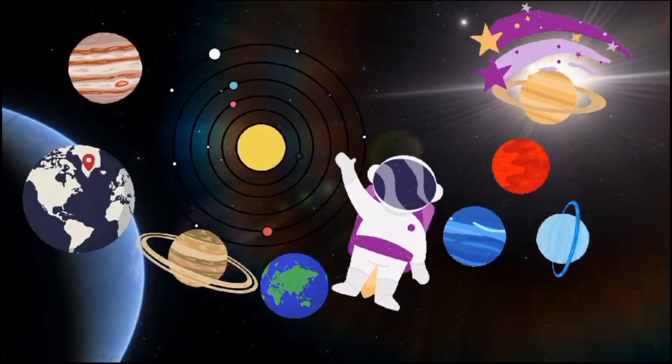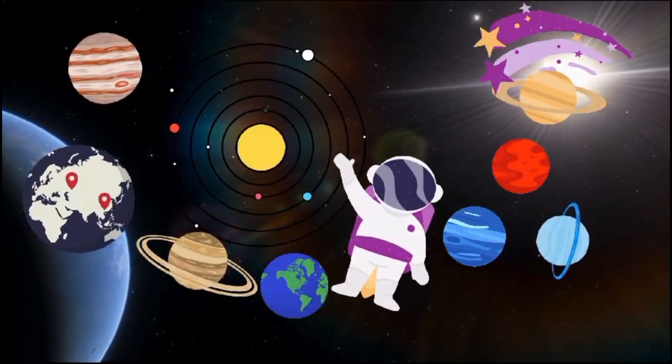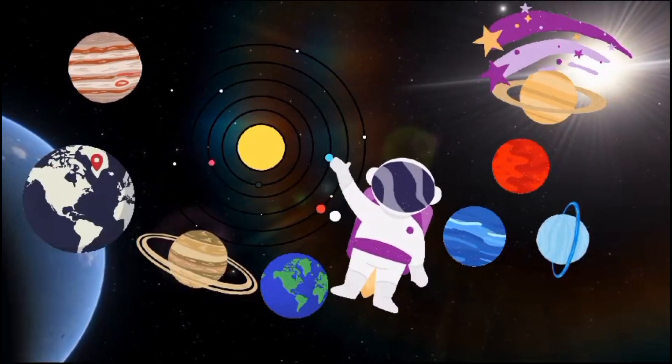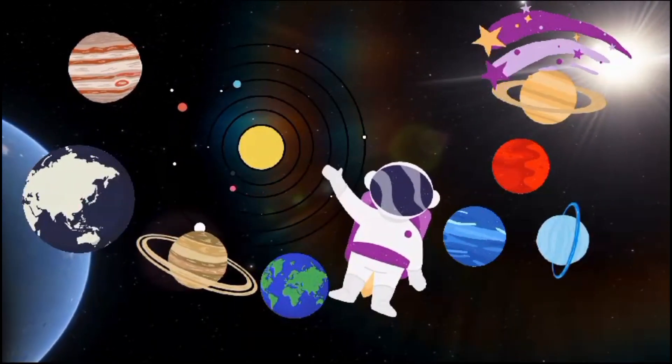There are eight planets in the solar system. We revolve around the Sun. Join us to learn about the different planets. Now sing along and have some fun.